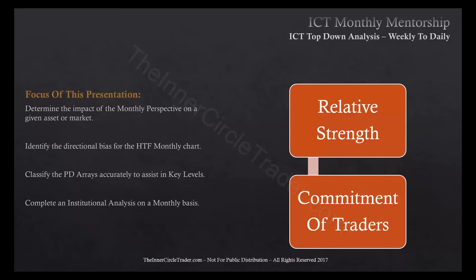Once I have what I believe are the leaders from my relative strength analysis — my watch list — hopefully the trades found on the monthly chart, like the Australian dollar in the previous teaching, make the cut. Then we go into Commitment of Traders. I like to look at what the commercials are doing because they're well-informed hedgers who usually create the tops and bottoms of the marketplace. If we can get their readings at extremes, we can trade the middle where the majority of the move is made.